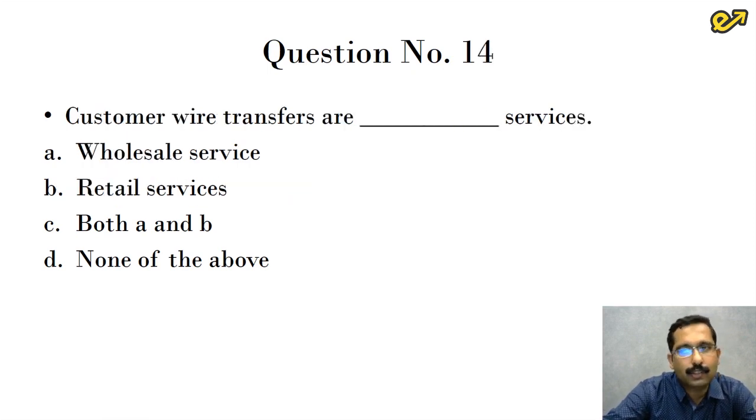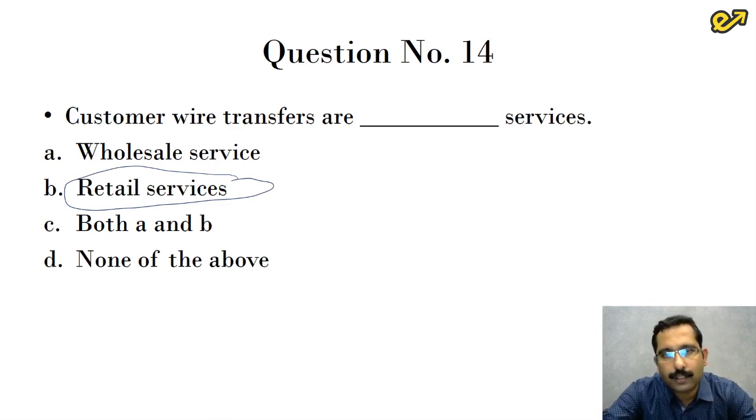Customer wire transfers are dash services. There are two kinds of wire transfers that happen. One is commercial wire transfers. The other one is customer wire transfer. Whenever it is customer wire transfers, it is the retail service. It is from one person to another person, the money is transferred and it is called customer wire transfers. So it's a retail service. Answer is option B.